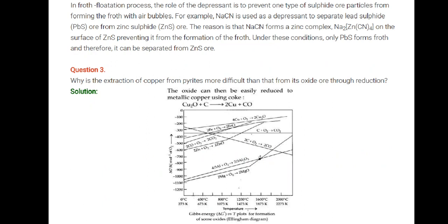Why is the extraction of copper from pyrites more difficult than from the oxides through reduction? The extraction of copper from pyrites is more difficult than that from its oxide. The oxide can be easily reduced to metallic copper using coke: Cu2O plus carbon forms 2 Cu plus CO. From the Gibbs free energy diagram, we can understand at what temperature this will be carried out.